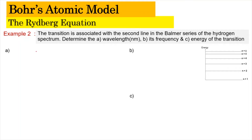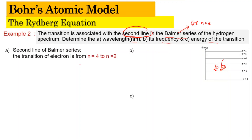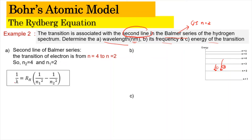Example two: the transition associated with the second line in the Balmer series of the hydrogen spectrum — determine the wavelength in nanometers, its frequency, and the energy of the transition. The Balmer series has a ground state of N=2. The first line is N=3 to N=2, and the second line is N=4 to N=2. So N2=4 and N1=2, where N2 is greater than N1. Since we need wavelength, we use: 1 over lambda equals RH times (1 over N1 squared minus 1 over N2 squared).